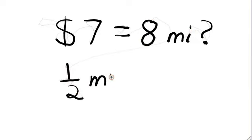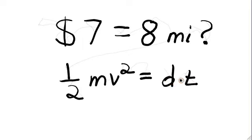Similarly, you should never write an equation like 1/2 mv squared, which we know is energy, equals distance times time, which is not the same as energy. Even though these are variables versus actual numbers, it makes no sense in the same way that 7 dollars equals 8 miles makes no sense.